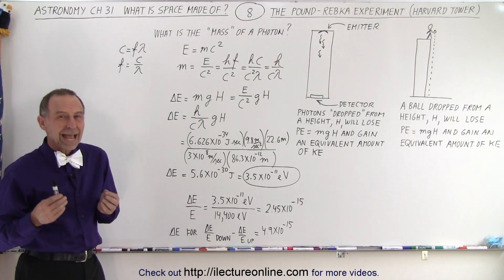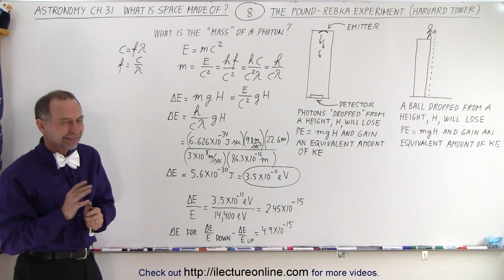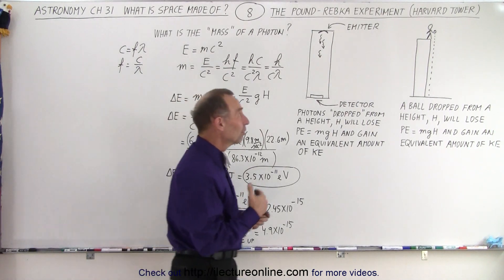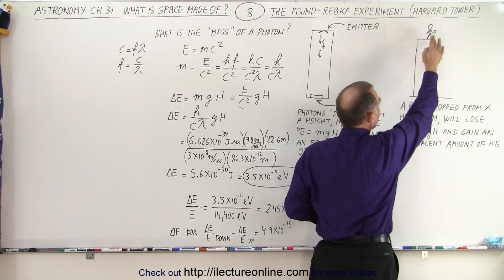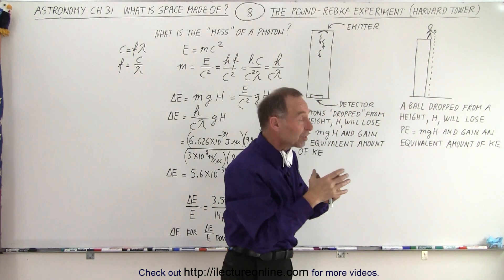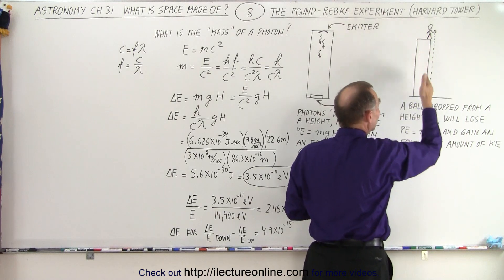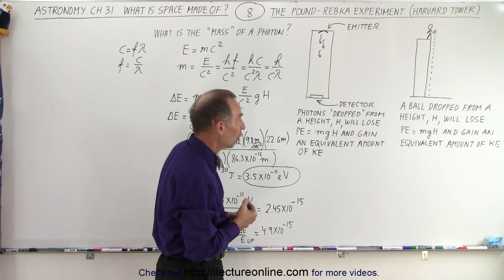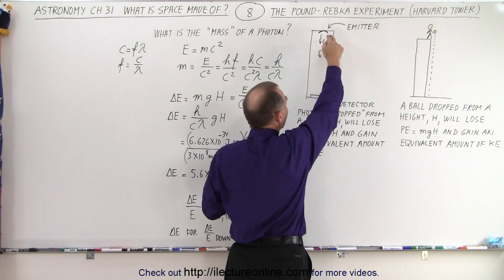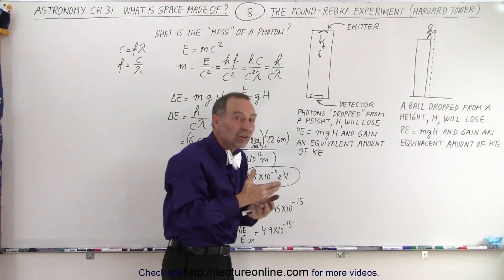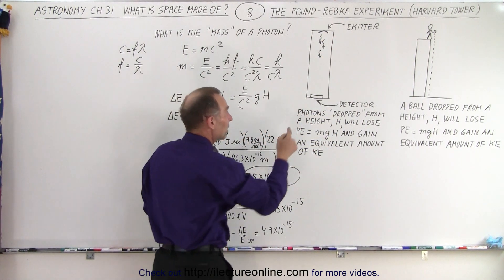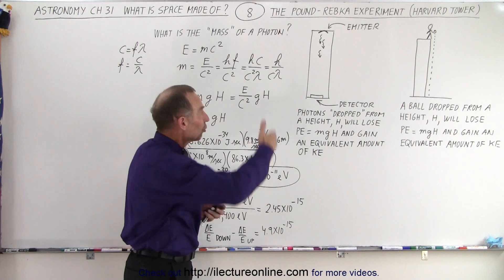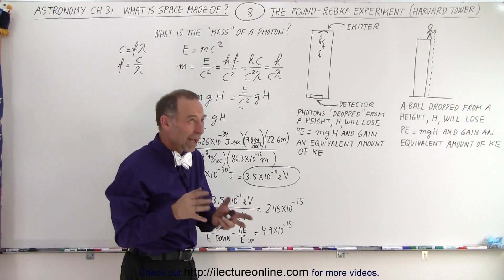So the experiment here actually proved it. I believe the experiment was done back in 1960. What they did was as follows: assuming that you go up on top of a tower, you drop an object, you know that the object has potential energy at the top. When you drop the object it will convert that potential energy into kinetic energy. Essentially you lose the potential energy and you gain kinetic energy. The drop was 22.6 meters, which is about 70 feet or so.